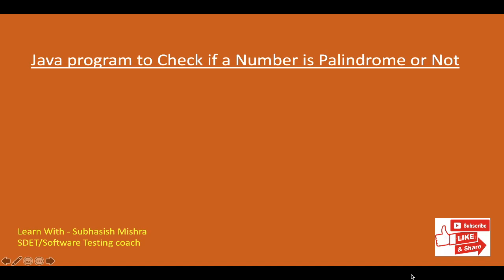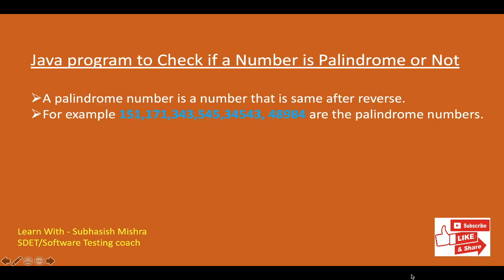First we will understand what is a palindrome number. A palindrome number is a number that is the same after reversing. For example 151 — if you reverse 151 you get the same result, 151. Similarly 171: if you reverse it you get 171. And 343: if you reverse it you get 343.